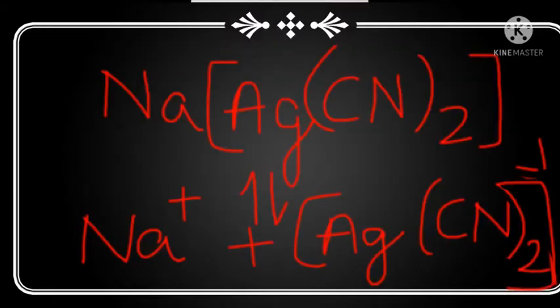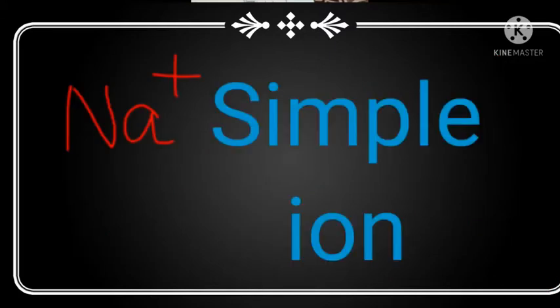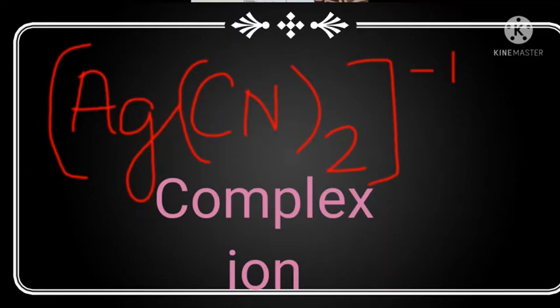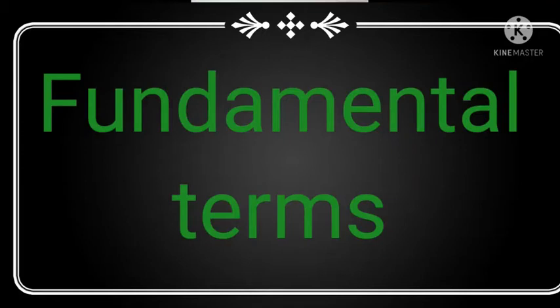When we dissociate sodium argento cyanide, this salt is going to form two types of ions: Na+ and [Ag(CN)2]-. Na+ is your simple ion and [Ag(CN)2]- is your complex ion. We are going to discuss fundamental terms related to coordinate compounds.